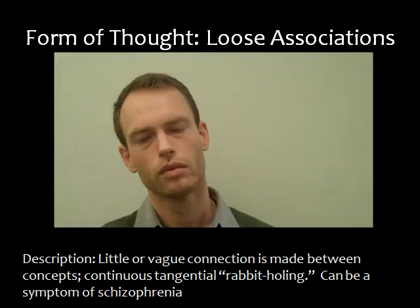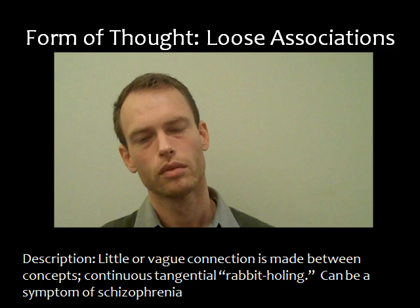In this example, the client continuously makes tangential connections and rabbit-holes, not returning to the central focus. They begin with talking about how they lost their job for drinking on shift and never return to that. Instead they talk about wanting a drink, scotch being their favorite, having drinks while watching Jimmy Fallon, a comparison to Jay Leno and his chin, and how his mother used to say off-color things. There are some connections made between content, but it moves the conversation further from the central idea. This is known as loose associations.